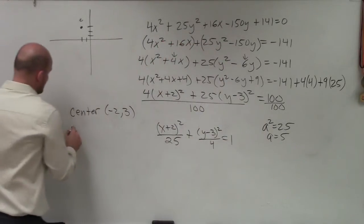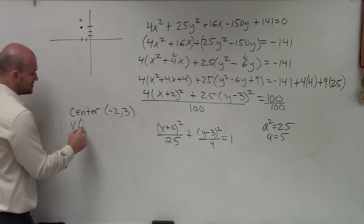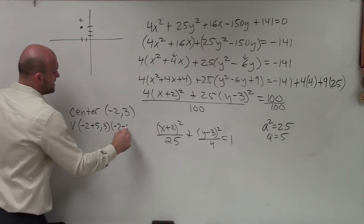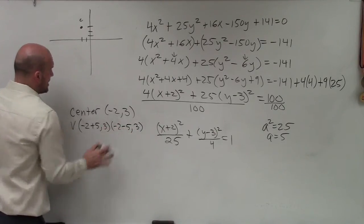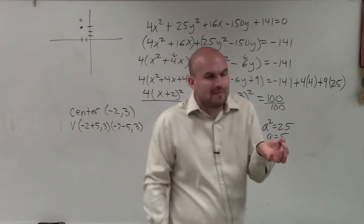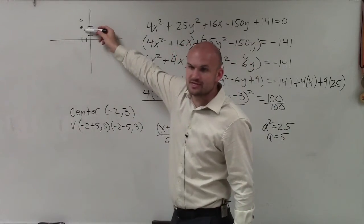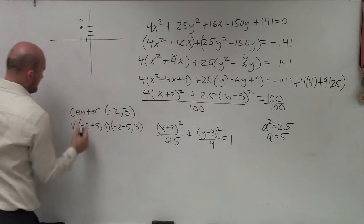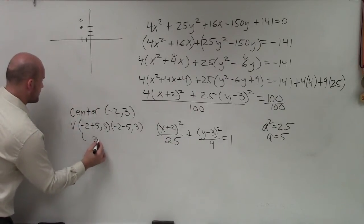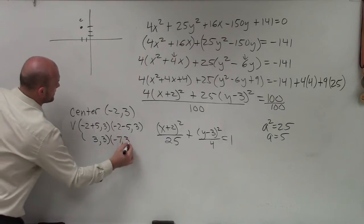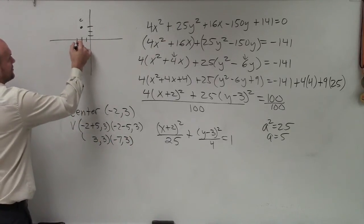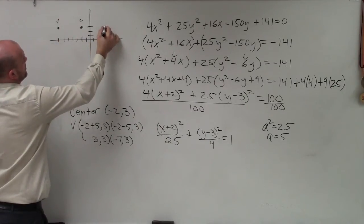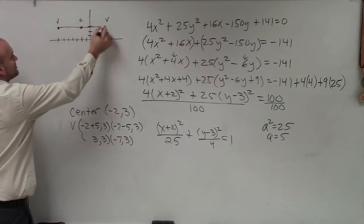So if I know my value of a is 5, to find my vertices, all I'm going to do is go 5 to the right and 5 to the left. So to find the vertices, all I can do mathematically is just do negative 2 plus 5 comma 3 and negative 2 minus 5 comma 3. The y-coordinate is not going to change for the vertices at all, because I'm just going left and right, because it's a horizontal major axis. So therefore, my vertices are going to be 3, 3, and negative 7, 3. So let's go and plot those.